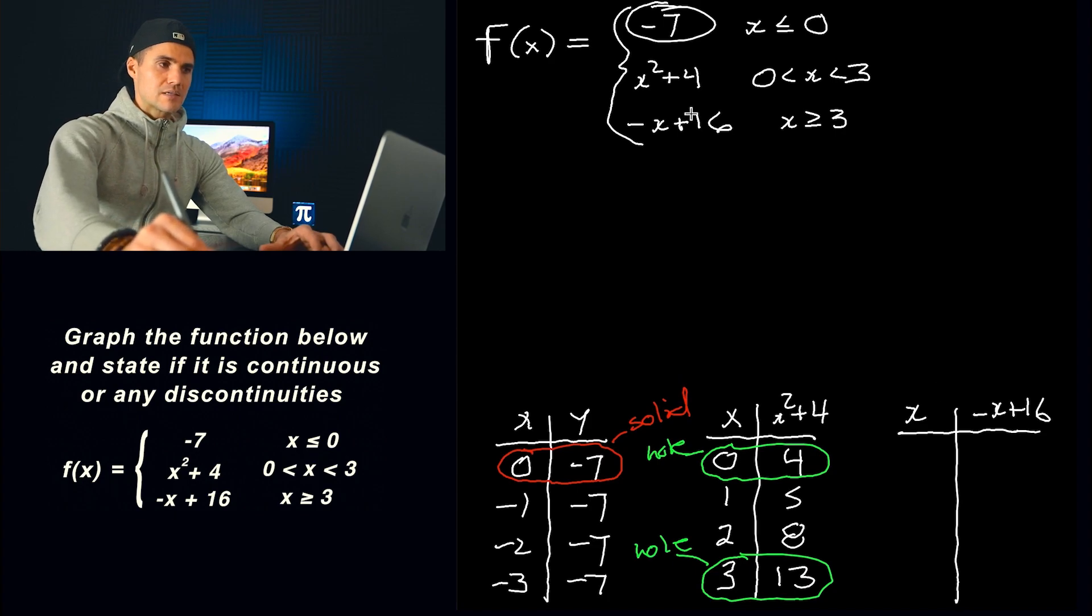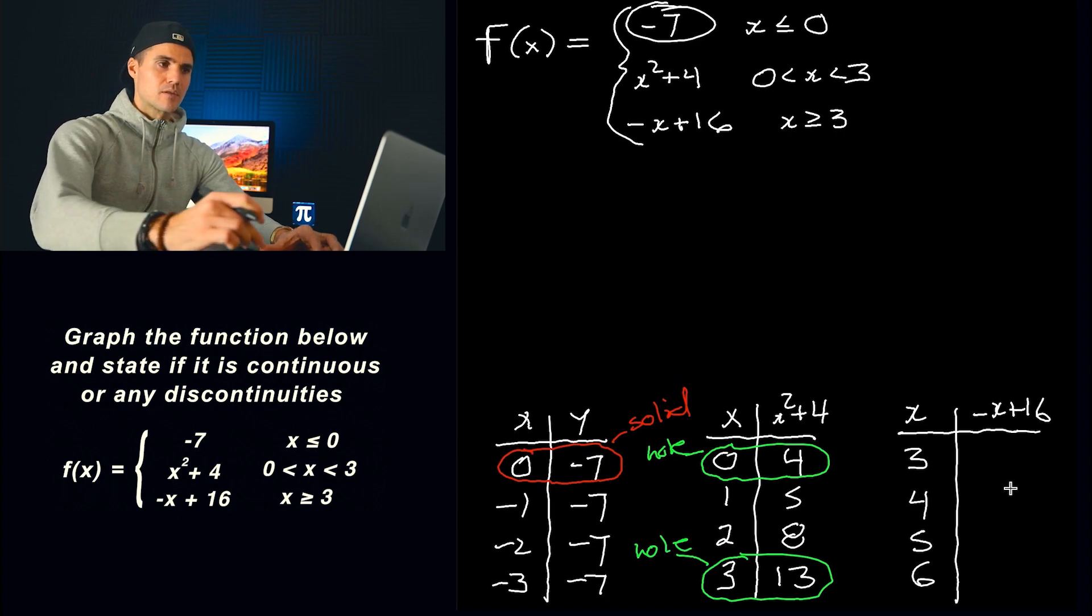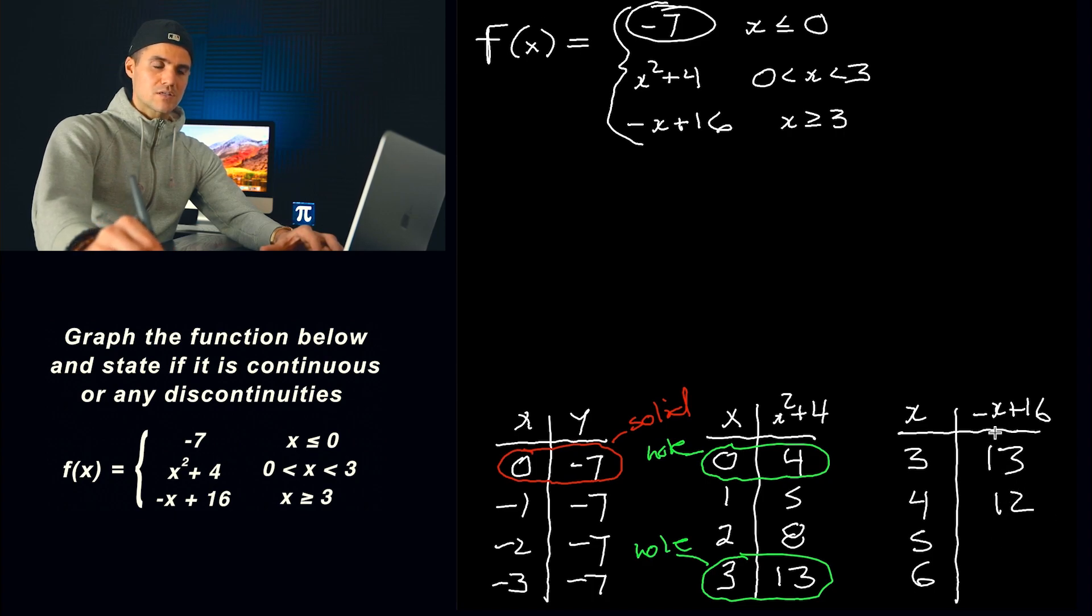Okay, so now we got this piece negative x plus 16 when x is greater than or equal to three. So let's pick some x values greater than or equal to three. So like three, four, five, six. And so negative three plus 16, that's going to be 13. And then we're going to have negative four plus 16, that's going to be 12. This just has a slope of negative one. So these are just going down by one. And then that's going to be 10.